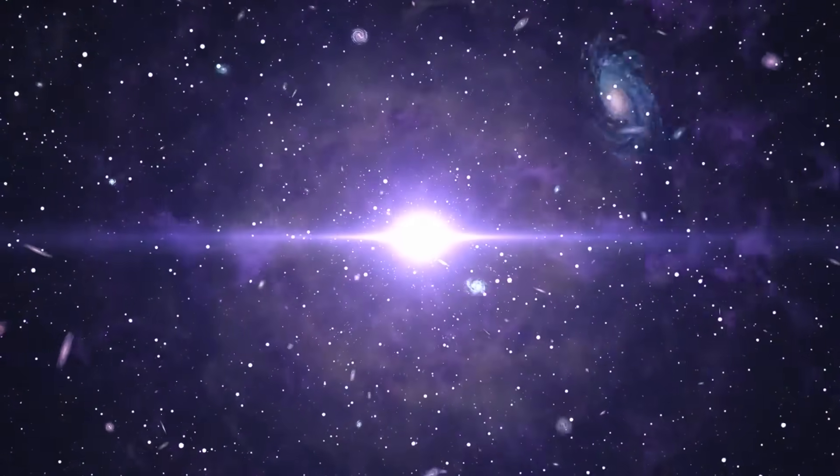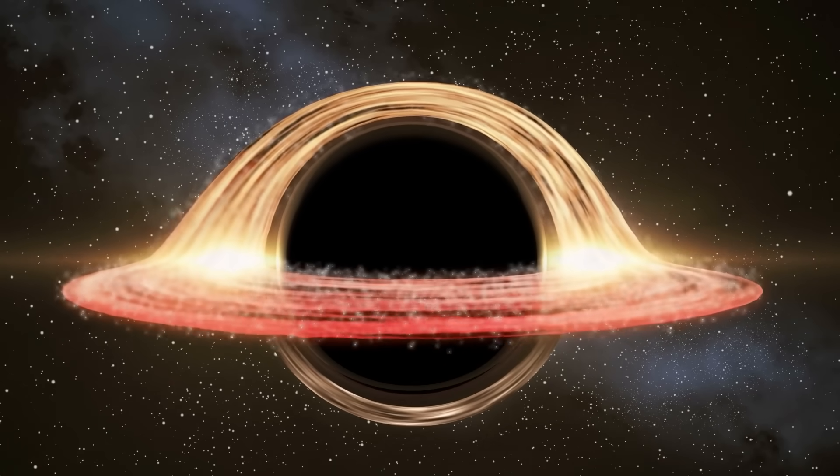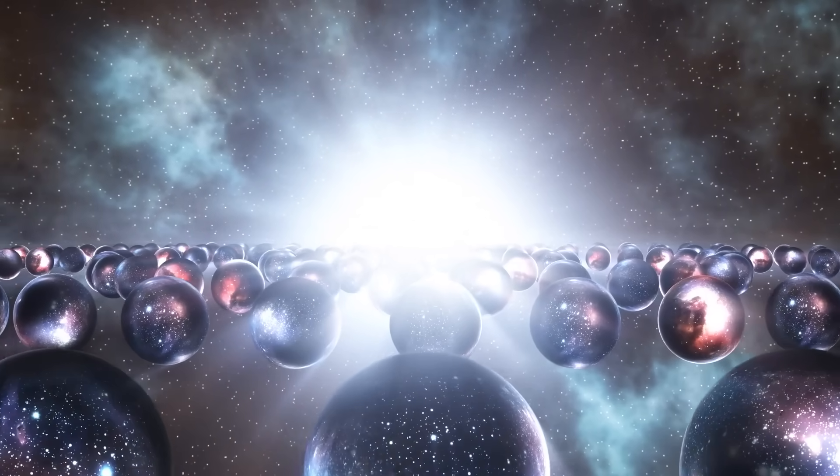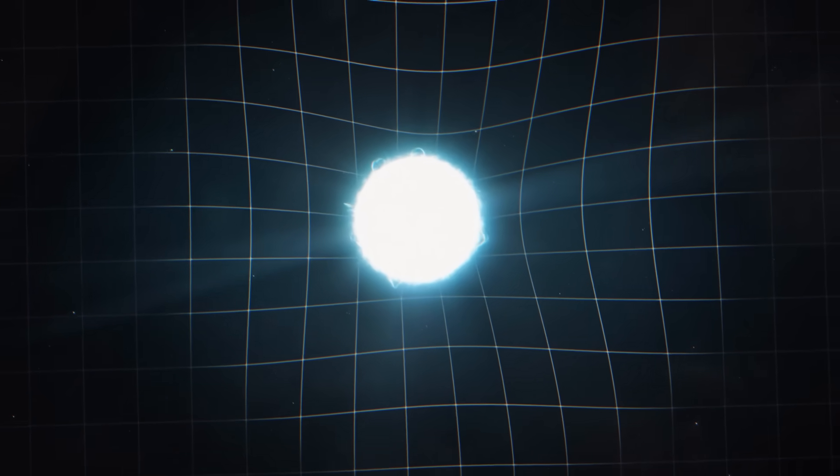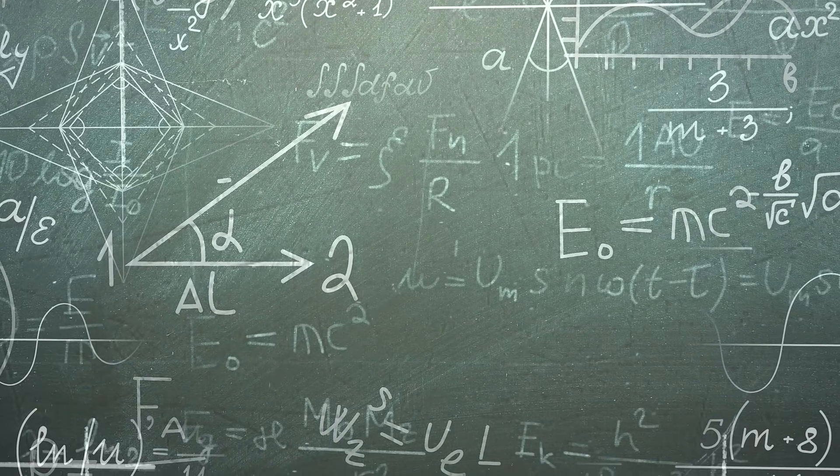While the classic Big Bang tells a singular story of creation, the Bounce models and black hole cosmology place the origin in a cyclical framework or even in a hierarchy of many universes. Both avoid singularity as a beginning, which has always remained an unsolved problem in classical physics.